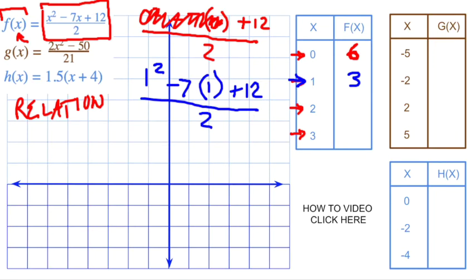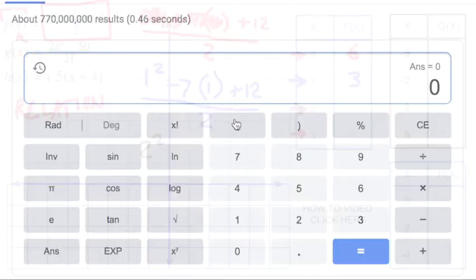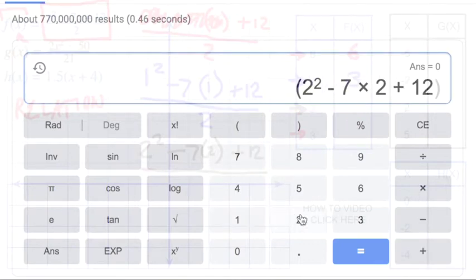Third one, what if x is 2? I'm going to use a calculator for this. Okay, instead of doing it in my head just because I know some of you would rather use a calculator. 2 squared minus 7 times 2 plus 12, all of that divided by 2.